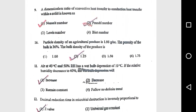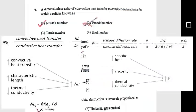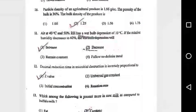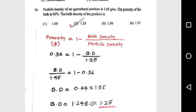Question 9: A dimensionless ratio of convective heat transfer to conduction heat transfer within a solid is known as the Nusselt number. Question 10: A particle density of an agricultural product is 1.95 g/cc, the porosity of bulk is 36%, the bulk density of the product is 1.25.